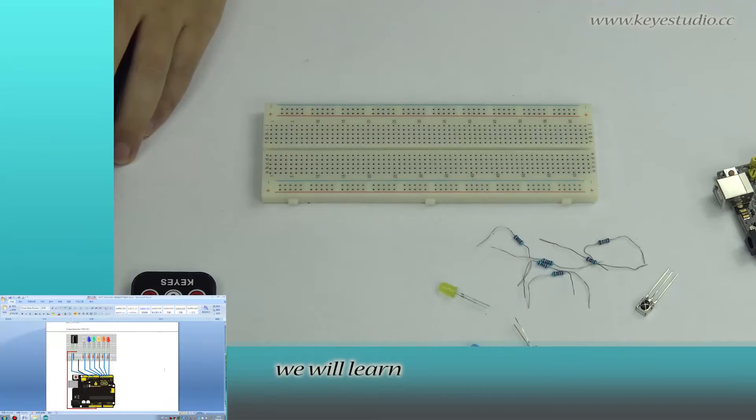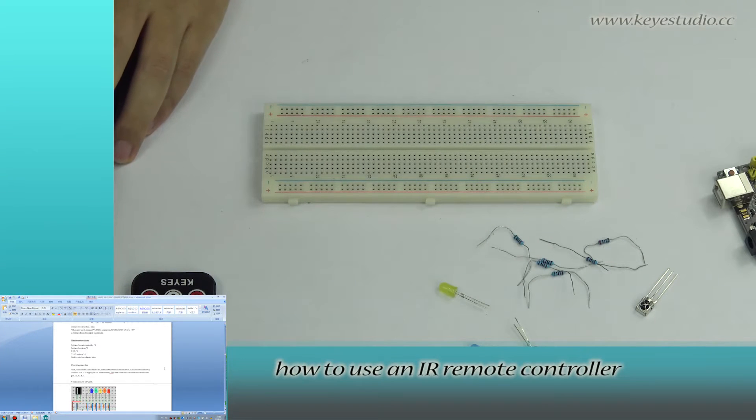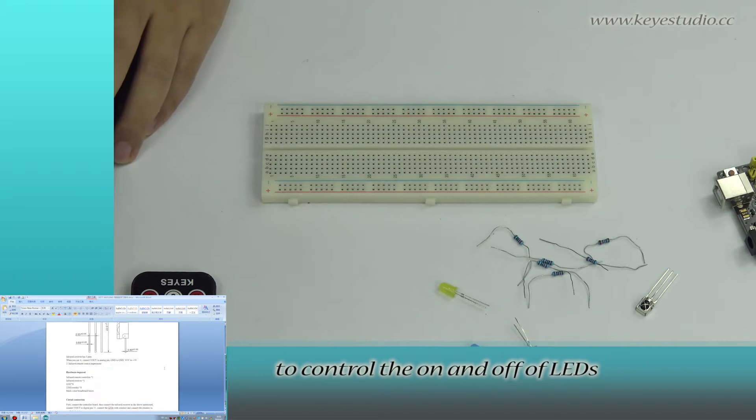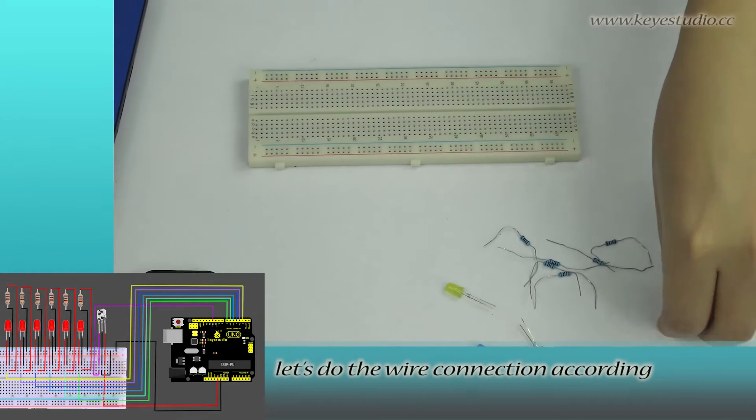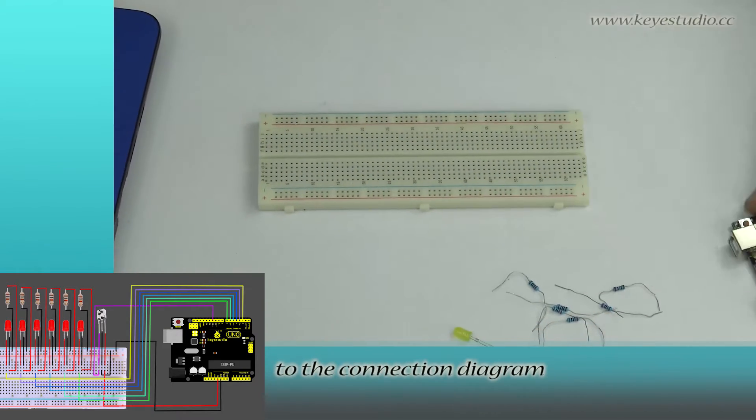In this lesson, we will learn how to use an IR remote controller to control the on and off of LEDs. First, let's do the wire connection according to the connection data.